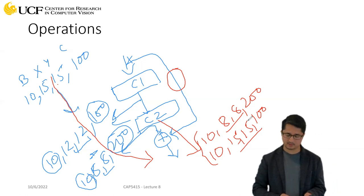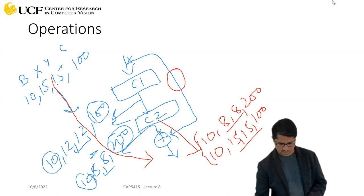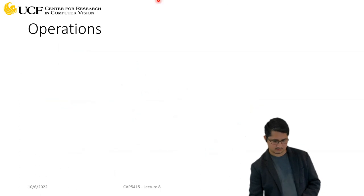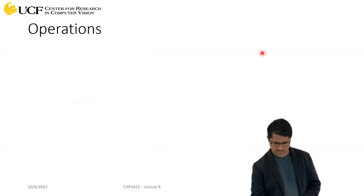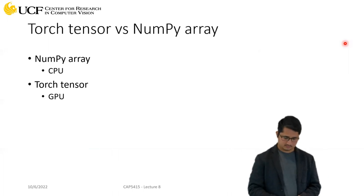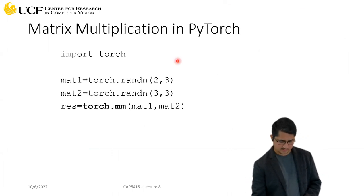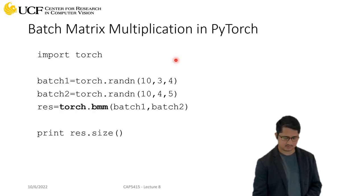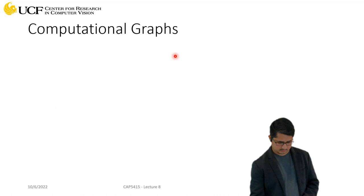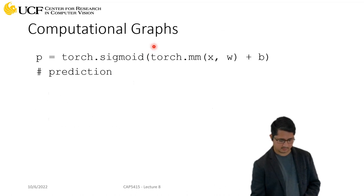That should clarify the skip connection question. So that was the first part — just the basics: how to define variables and use them for your networks.